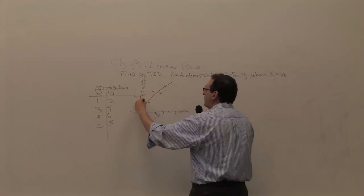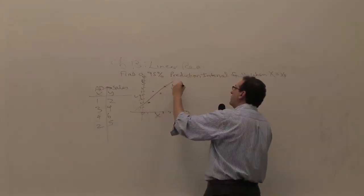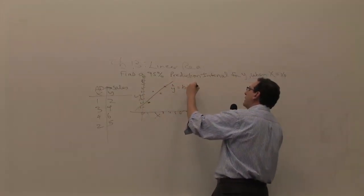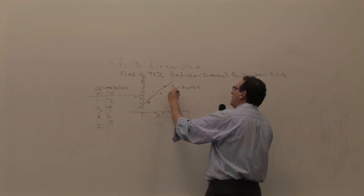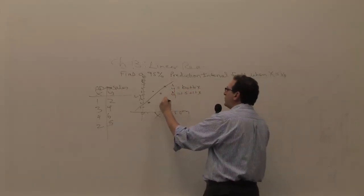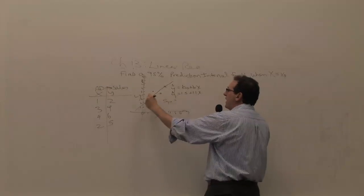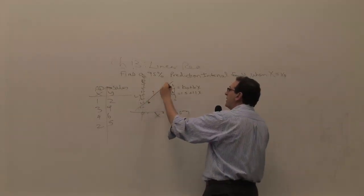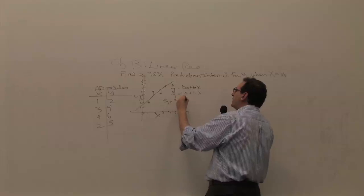We graphed the straight line between them. We got y hat equals b0 plus b1x was y hat equals 1.5 plus 1.1x. We got the syx was equal to how close the dots are to the straight line. This particular case came out to 1.16.